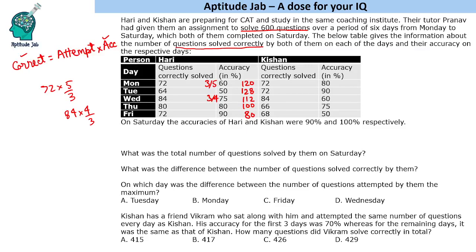Now for Kishan: 80% accuracy with 90 correct means 90 attempts... wait, 90% accuracy with 72 correct means 80 attempts. 60% accuracy gives 140 attempts. 75% accuracy with 66 correct — multiply by 4/3 — gives 88. And 50% accuracy means 136 attempts. These are Kishan's attempts through Friday.